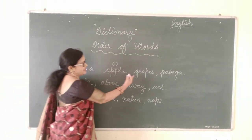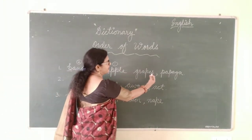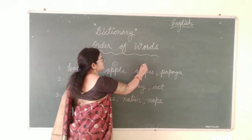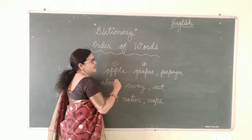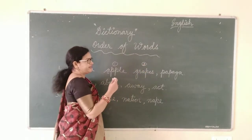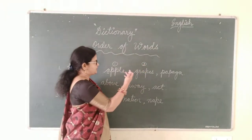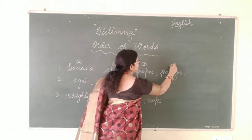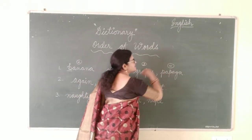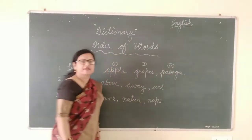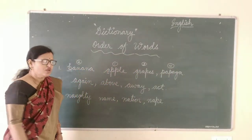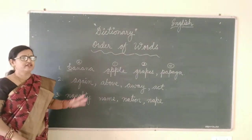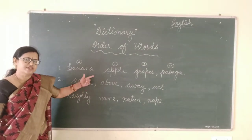After B, C is not there, then D is not there either, so G comes next — grapes will be third. And last but not the least, P — papaya. So we have arranged banana, apple, grapes, and papaya in alphabetical order, just like in the dictionary.